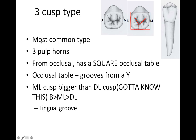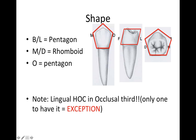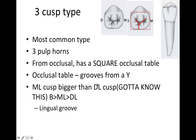The three-cusp type is the most common. In this case, we're going to have three pulp horns. From the occlusal, it's got a square occlusal table. You need to differentiate between occlusal table and occlusal outline — they can catch you on this. The shape of the occlusal table is square, but the occlusal outline is a pentagon. The occlusal table is square, so the grooves form a Y shape.